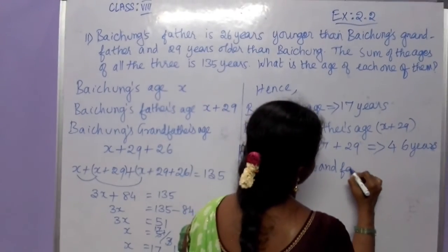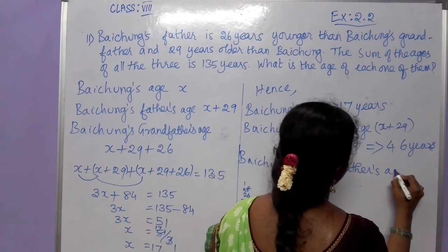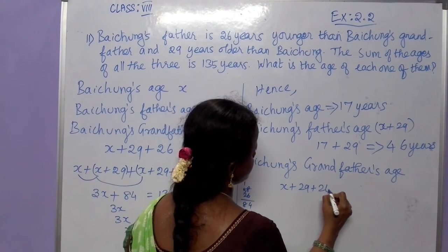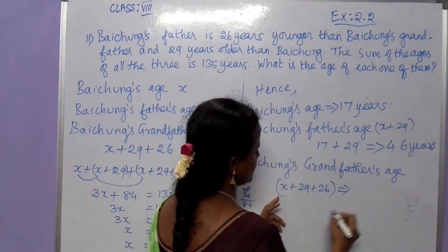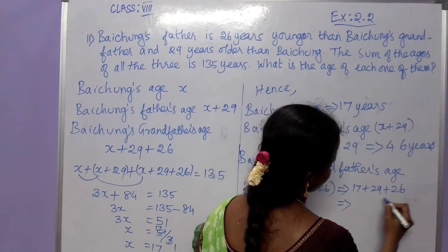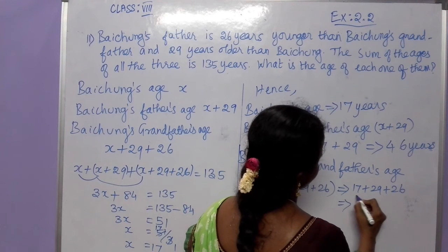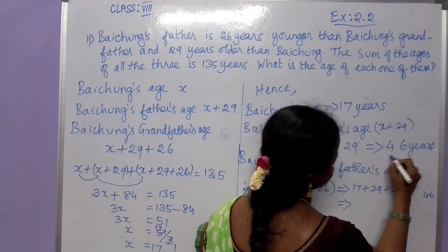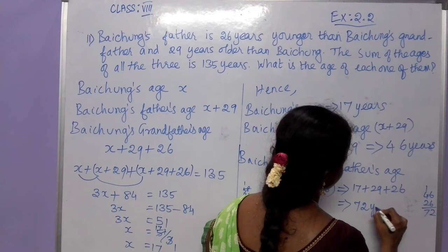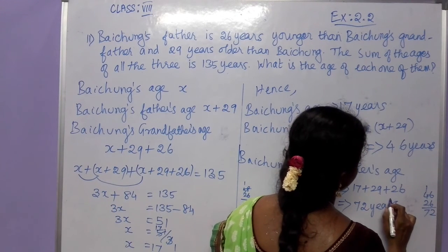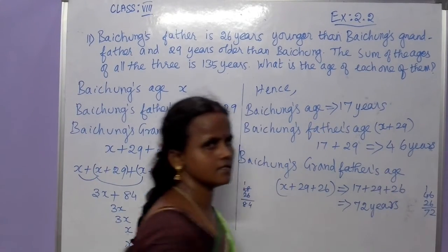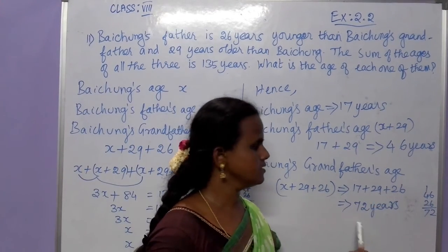Grandfather's age: x plus 29 plus 26. Substituting x as 17: 17 plus 29 plus 26. First, 17 plus 29 is 46. Then 46 plus 26 is 72 years. So Pacham's age is 17, Pacham's father's age is 46 years, and Pacham's grandfather's age is 72 years.